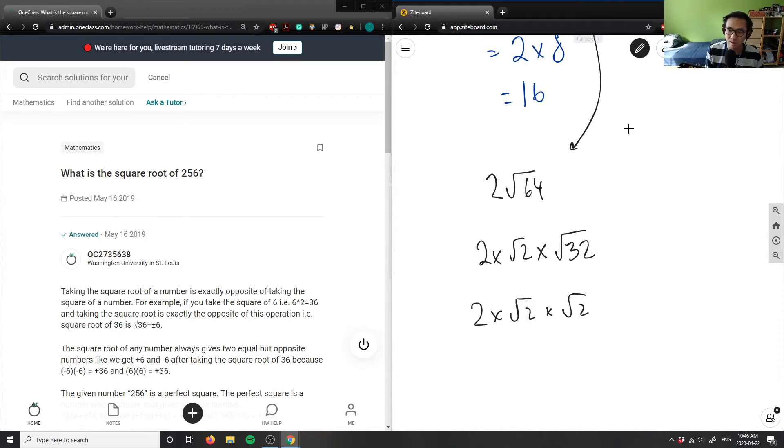Root two. This would equal simply two times two times two times two. Square root of two times square root of two is two times root 16, and by then you would know that's four times root 16. And this is simply just four times four which is 16.